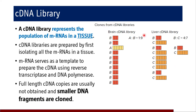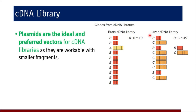As shown in this diagram, brain cDNA library and liver cell cDNA library demonstrate that libraries are tissue-specific. Genomic libraries are cell-line or tissue-specific using total DNA, whereas cDNA libraries use mRNA converted to cDNA. Plasmids are the ideal and preferred vectors for cDNA libraries, as they are workable with smaller fragments. For increasing lengths of genetic sequences, bacteriophages and cosmids are also used.